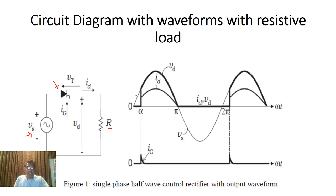This waveform shows the sinusoidal AC voltage coming from the input side, that is VS. After some delay angle — known as the firing angle alpha — the gate pulse is given to this thyristor. We know that the thyristor is a controlled device; basically it is a semi-controlled device, and if the gate pulse is given to it, it will behave like an on-switch.